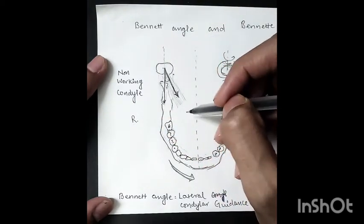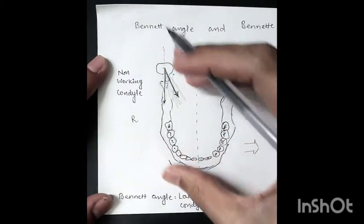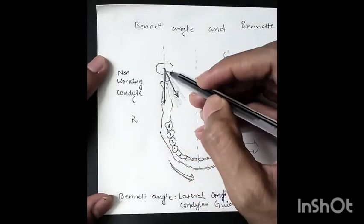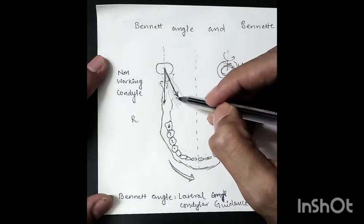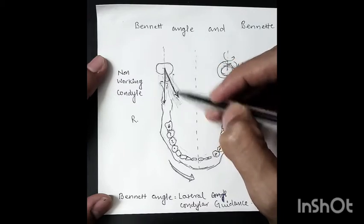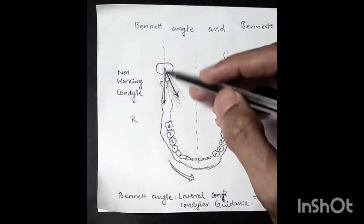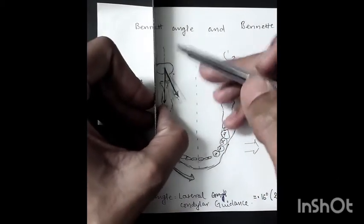When the mandible moves to the left side, our non-working condyle will move in this direction. This path of the non-working condyle will make an angle with the sagittal plane. So this will be our sagittal plane and this will be the movement or the pathway of our non-working condyle.